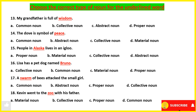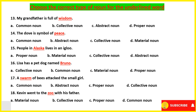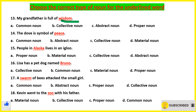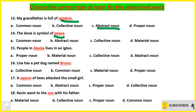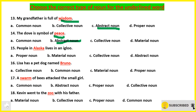The next set: 'My grandfather is full of wisdom.' Wisdom is a quality, so that will be abstract noun. 'The dove is a symbol of peace.' Peace will also be abstract noun.